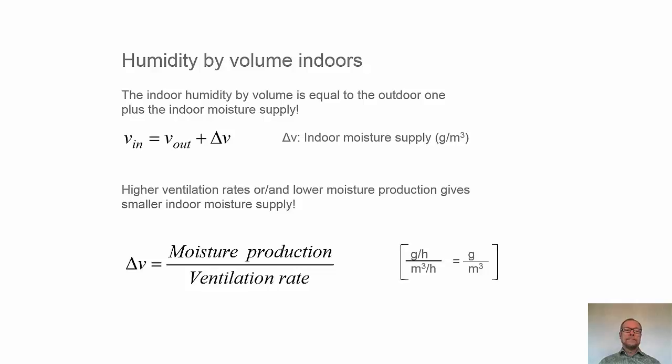Humidity by volume indoors. When we ventilate our buildings we bring in the same water vapor concentration as we have outdoors. But inside the buildings we are producing moisture and so we will have a higher humidity by volume in the indoor air than in the outdoor air. The difference we call delta V, the indoor moisture supply. And it's caused by production of moisture indoors from cooking, cleaning, etc.